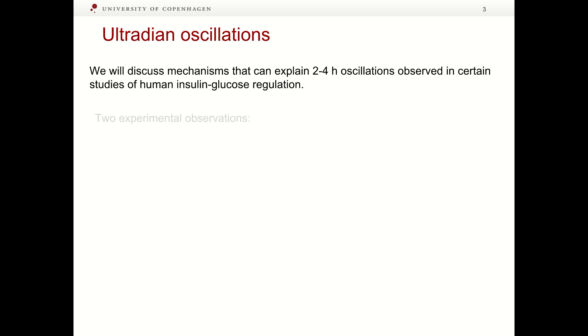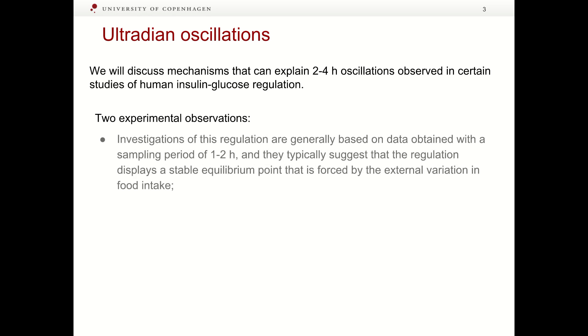Let us focus on two experimental observations. Investigations of the interaction between insulin and glucose in humans are typically based on data obtained with a sampling period of 1-2 hours. Such studies traditionally suggest that the regulation displays a stable equilibrium point which is forced by meals or other variations in food intake.